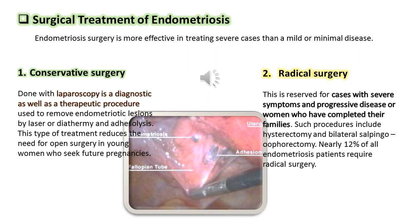Number 2: Radical surgery is reserved for cases with severe symptoms and progressive disease, or women who have completed their families. Such procedures include hysterectomy and bilateral salpingo-oophorectomy. Nearly 12% of all endometriosis patients require radical surgery.